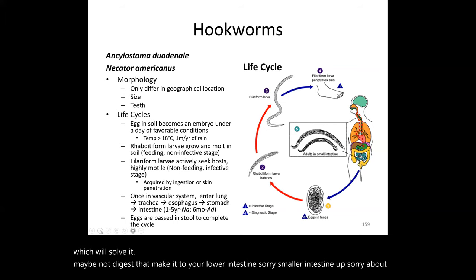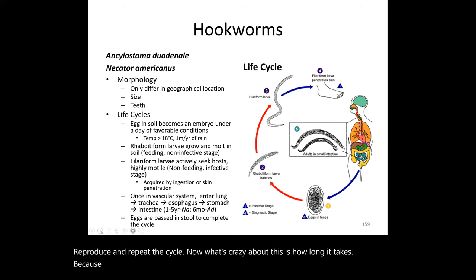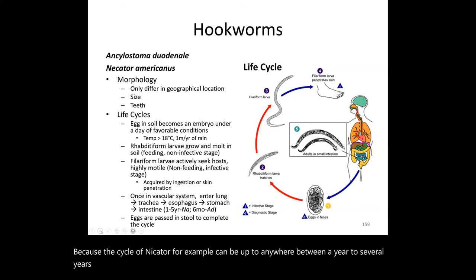What's notable is how long this cycle takes: Necator americanus can take anywhere from one to several years to complete its cycle, whereas Ancylostoma duodenale is a bit faster, taking about half a year.